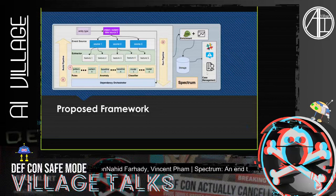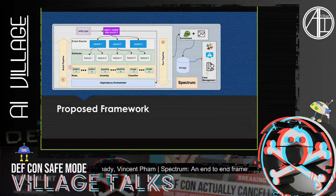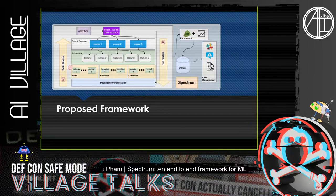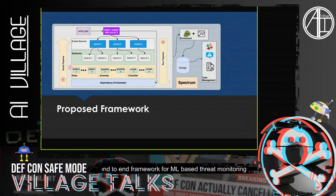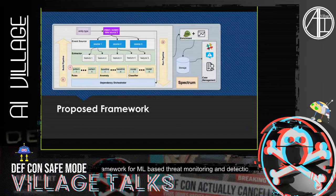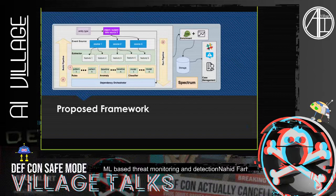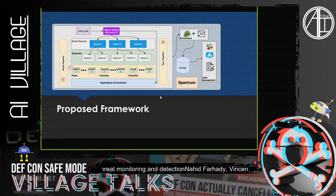This information is then used to flag a particular entity, open a case management ticket for analysts to look into, or be displayed in a UI so analysts can view a ranked list of suspicious entities and events — determining whether each is a true positive or false positive in terms of insider threat. In a nutshell, this is what our Spectrum system looks like.